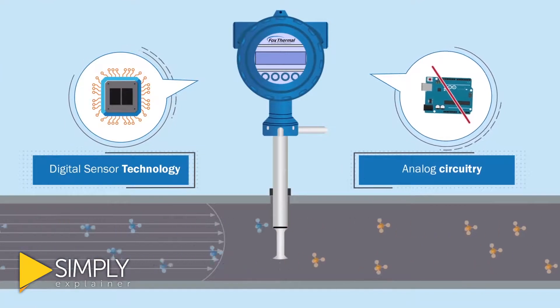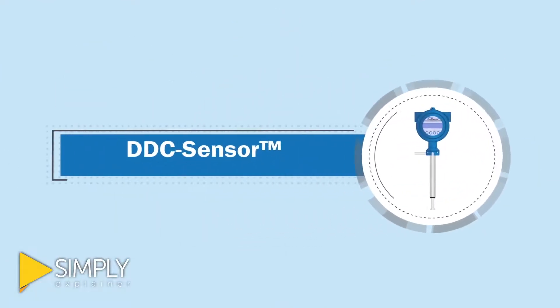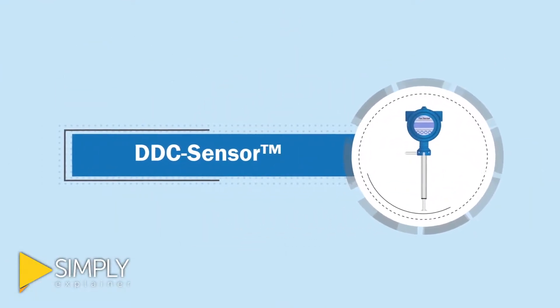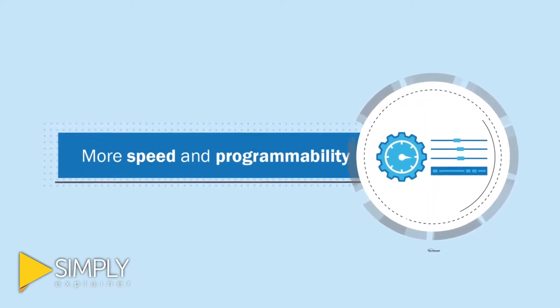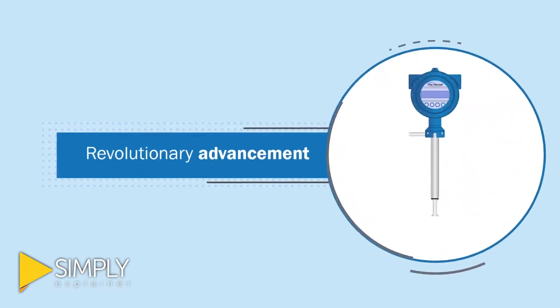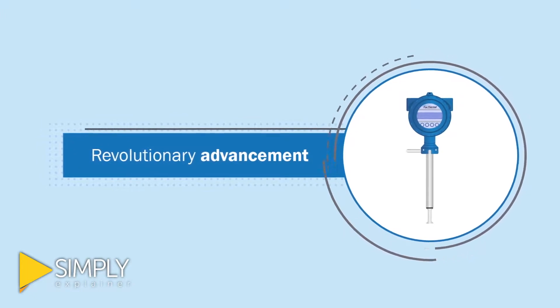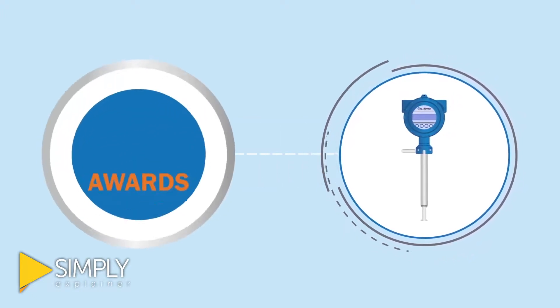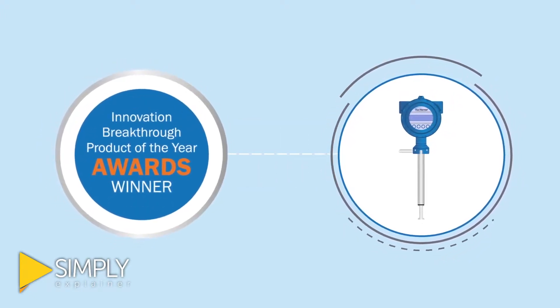Instead of using analog circuitry, FOX thermal's DDC sensor is interfaced directly to the meter's microprocessor for more speed and programmability. This revolutionary advancement in the technology has laid the foundation for award winning and truly innovative flow meter features.